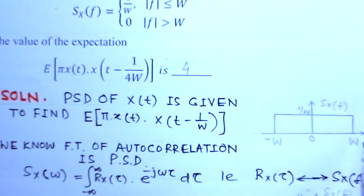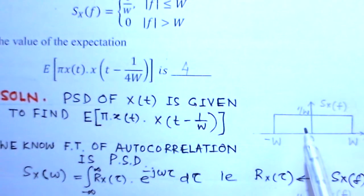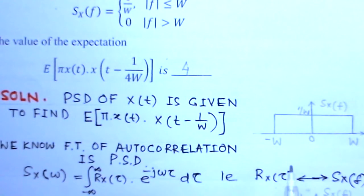Now Sx(f) could be graphically plotted as this function within the frequency W and minus W, and its amplitude is 1/W. So this is the function and this function is power spectral density.